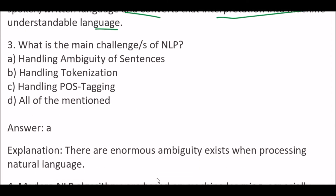Next question: what is the main challenge of NLP? Options are: A) Handling ambiguity of sentence, B) Handling tokenization, C) Handling POS tagging, D) All of the mentioned. The right answer is option A, handling ambiguity of sentence, because there is enormous ambiguity when processing natural language.